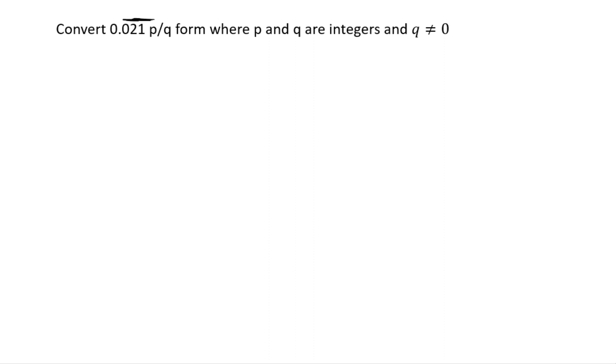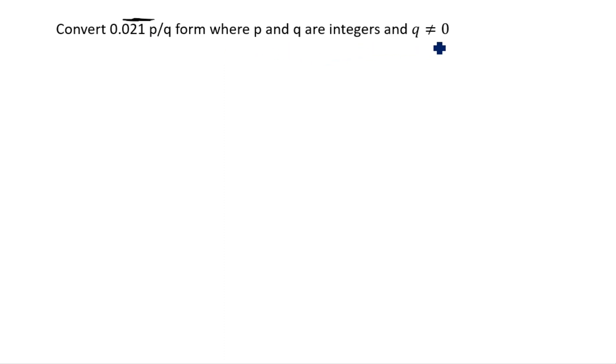Hi friends, welcome to my channel Excellent Ideas and Education. Today we are going to solve this problem: convert 0.021 bar to p by q form, where p and q are integers and q is not equal to 0.